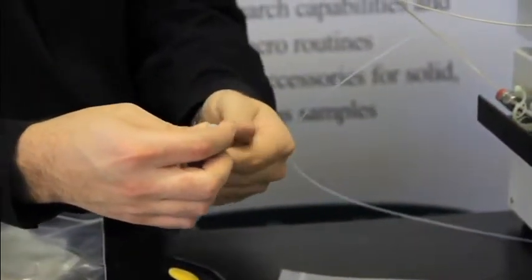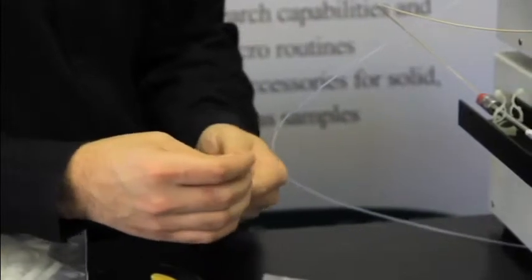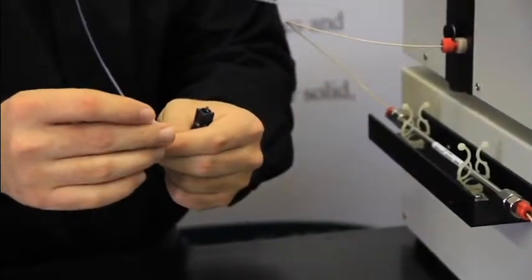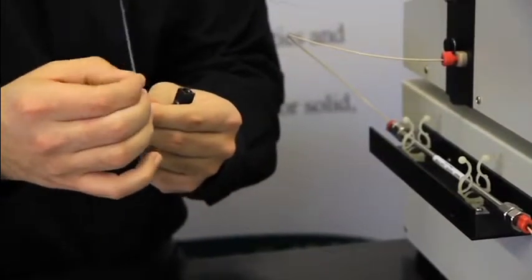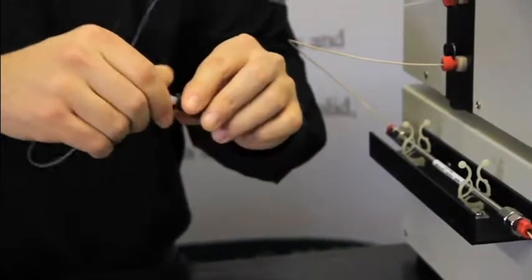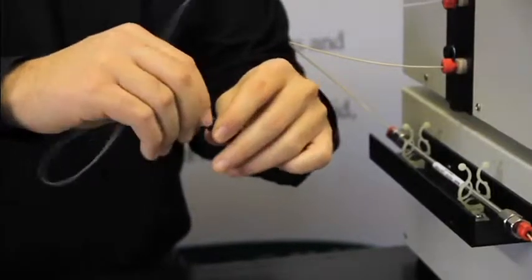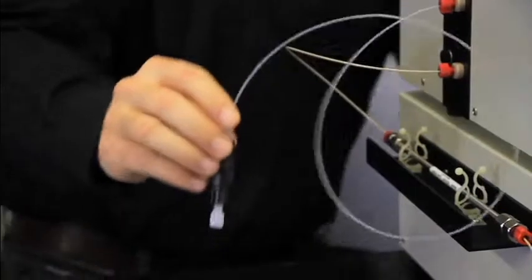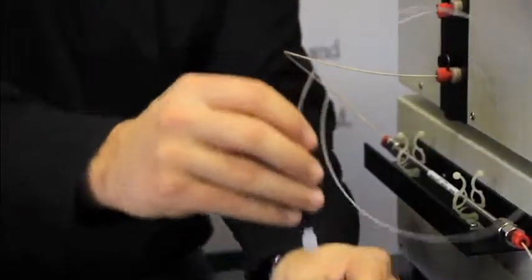So we're going to connect the tubing from the flow cell to the appropriate side of the back pressure regulator. Feed the tubing through, push the fitting in, and finger tight it down. This can now go in a waste container.